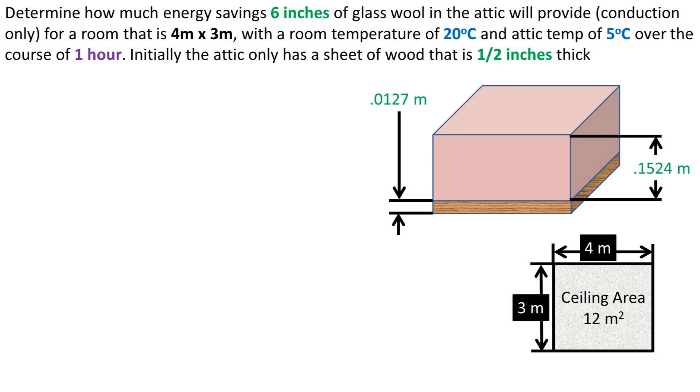In this problem, we want to determine how much energy savings adding 6 inches of glass wool in the attic will provide. We are assuming conduction only, for a room that is 4 meters by 3 meters, with a room temperature of 20 degrees Celsius and an attic temperature of 5 degrees Celsius, over the course of one hour.